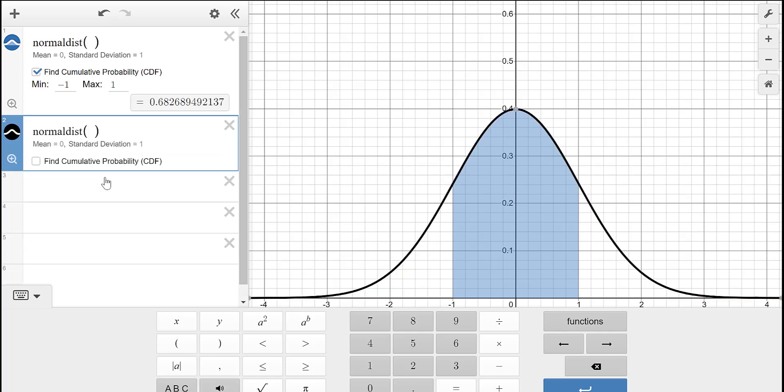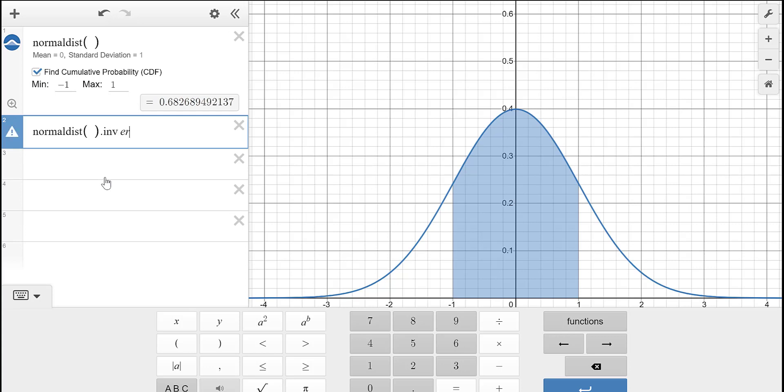But then afterwards, you're going to put a period and you're going to put inverse CDF. So remember, it says the normal distribution, find the cumulative probability CDF. Now we're going to do the backwards, the inverse of that distribution.